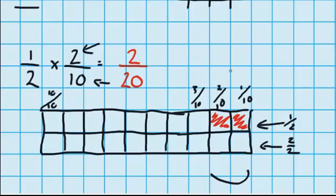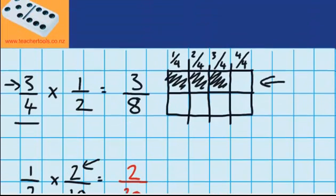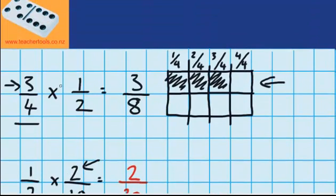Now you might have noticed the little pattern as we've been working these out. If I multiply these numerators together, 1 times 2, I get the numerator for my answer, 2. And if I multiply these denominators together, 2 times 10, that equals 20. Let's go up and see if that worked for the first one. 3 times 1, that equals 3. And 4 times 2, that equals 8.